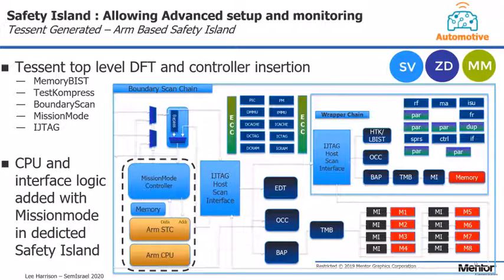But first, let's take a look at a finished product. This is an example block diagram of an automotive IC, showing the different technologies required to take the design from concept through to ISO 26262 certification. As you can see, there are a number of different technologies on this chip. Firstly, there are the low-level functional safety mechanisms that have been inserted — structures such as parity, logic duplication, and ECC. We then have a mixture of built-in tests, both for memories and for logic.